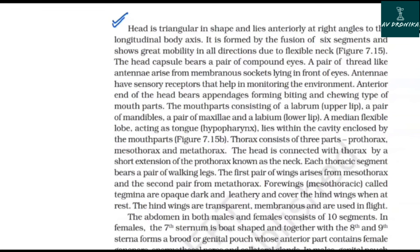The head is triangular in shape and lies anteriorly at right angles to the longitudinal body axis. It is formed by the fusion of six segments and shows great mobility in all directions due to a flexible neck. The head capsule bears a pair of compound eyes. A pair of thread-like antennae arise from membranous sockets lying in front of the eyes, bearing sensory receptors that help in monitoring the environment. The anterior end of the head bears appendages forming biting and chewing mouthparts, consisting of a labrum (upper lip), a pair of mandibles, a pair of maxillae, a labium (lower lip), and a median flexible lobe called the hypopharynx acting as the tongue.